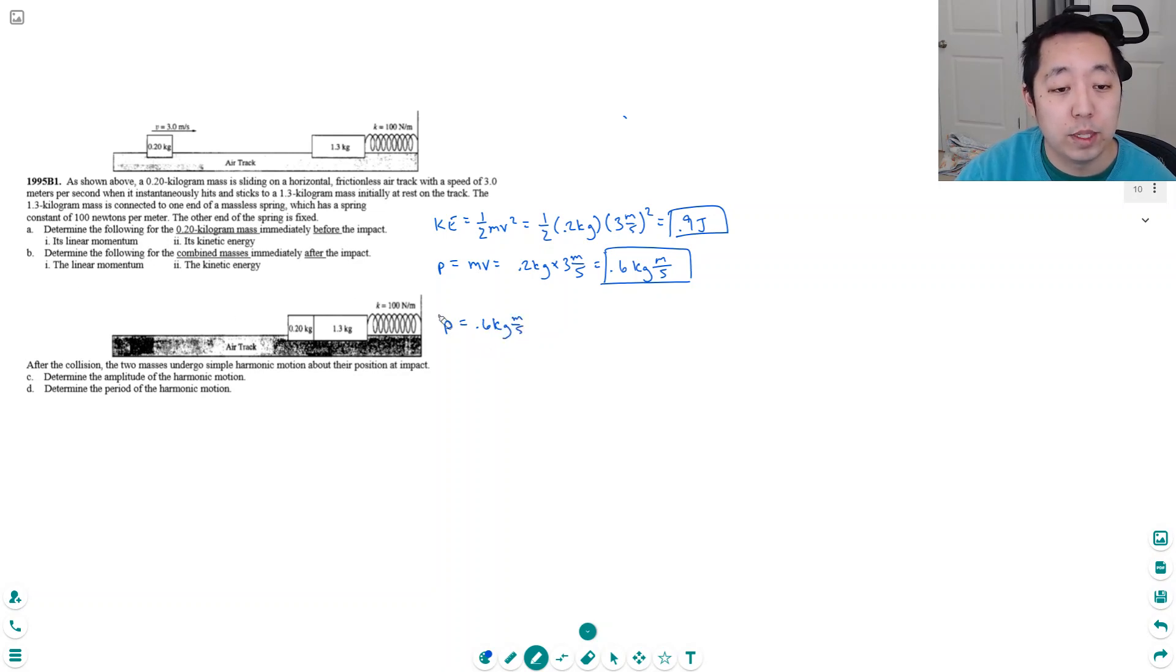Alright, so that's part one. The linear momentum is not any different. However to find the combined velocity of them two together, I need to know, well to find the kinetic energy I need to know how fast they're moving together after they stick together. And I can use that because I know its momentum. I know its momentum is m times v.